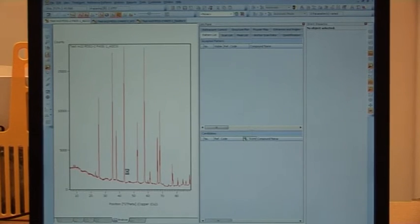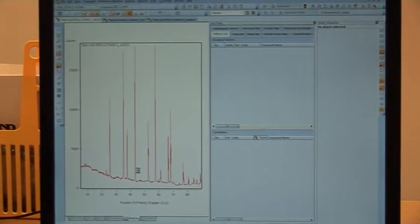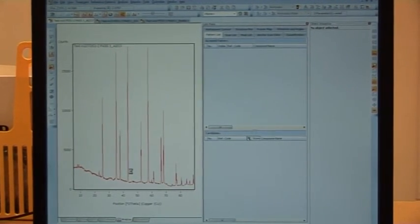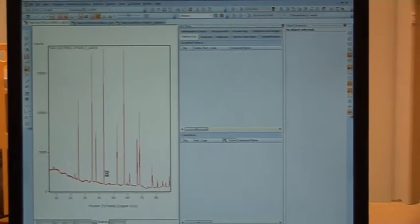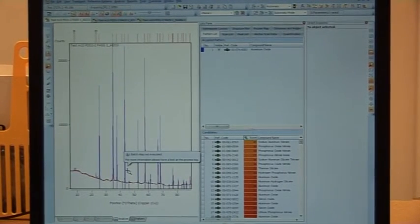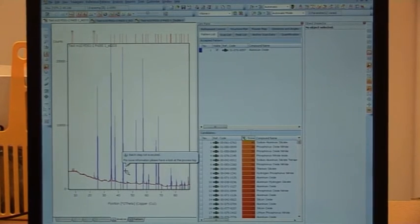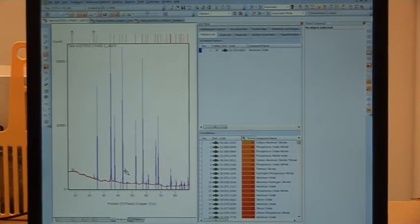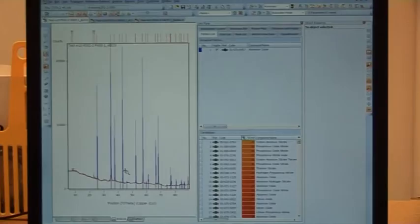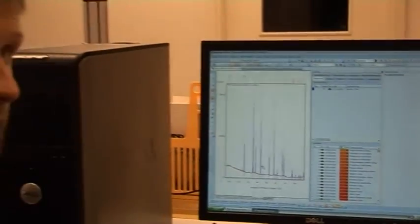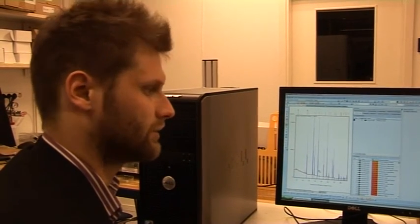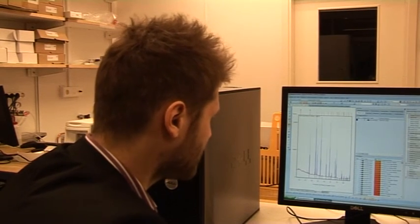The database, there are two main databases. It's actually one main database that's called PDF, it's powder diffraction file. That one is extremely expensive and we have it here. I think we pay maybe 30,000 per year for this license to have this access to the database. But there is also a free database, I think it's called COD, which is quite good. But it contains like twice less number of reference diffractograms in it. But it's a good database to start with sometimes if you don't have to pay.